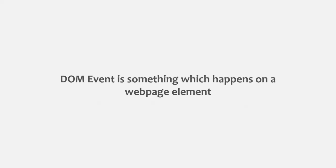An event can also happen on a browser — for example, scrolling up or down in a web page using the browser scroll bar, or maximizing or minimizing the browser window. These are events which are specific to the browser. Similarly, an event can also happen on the keyboard — for example, when a key is pressed, the key press event happens. We can also have mouse events like mouse enter, mouse out, mouse click, etc.